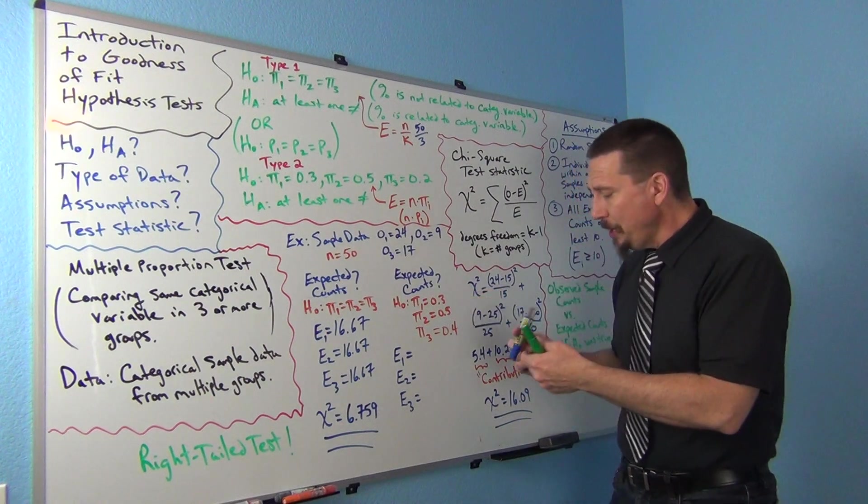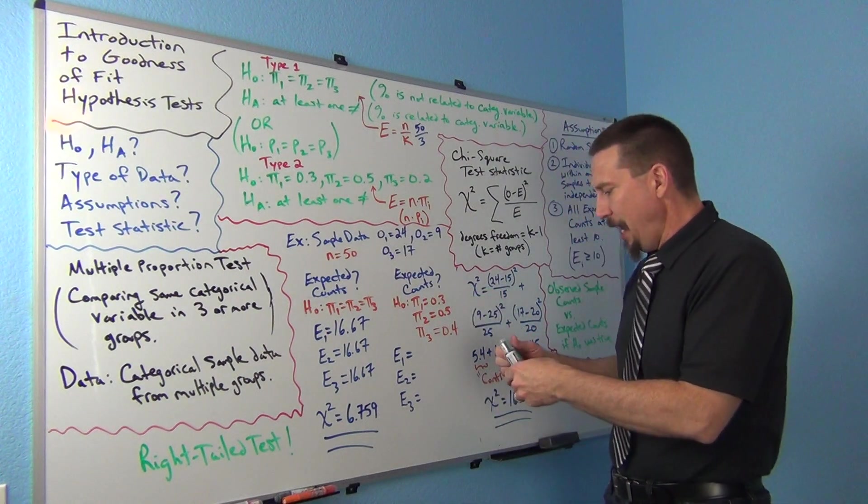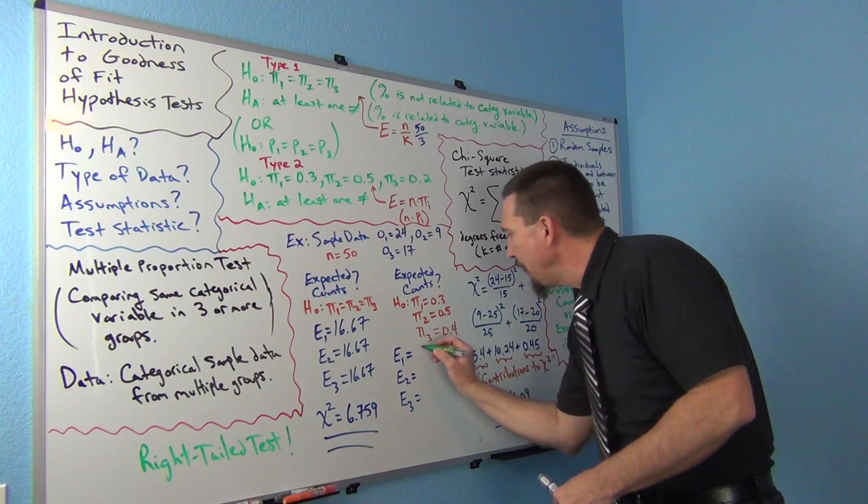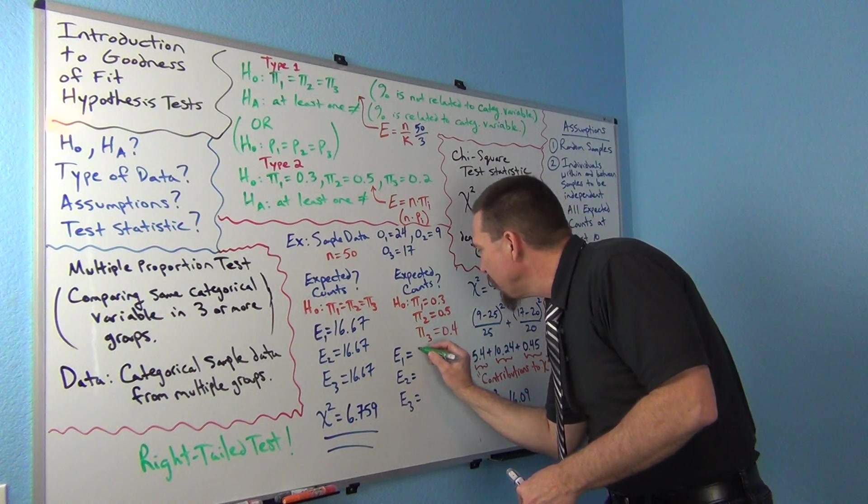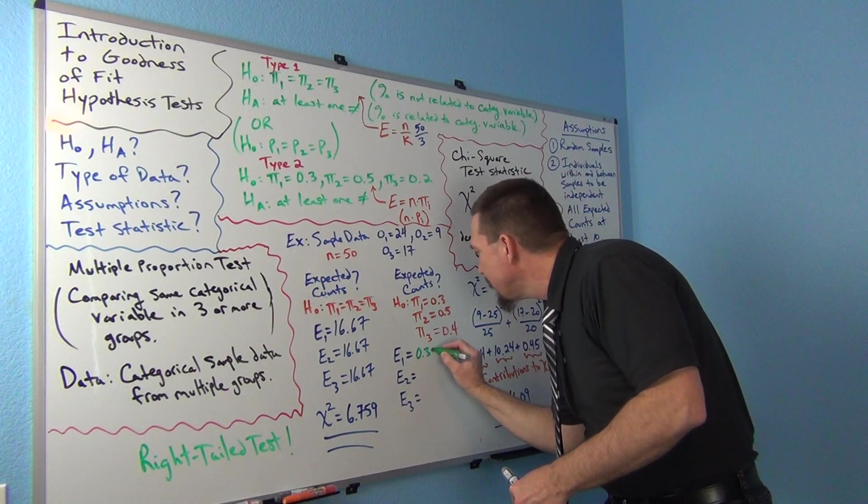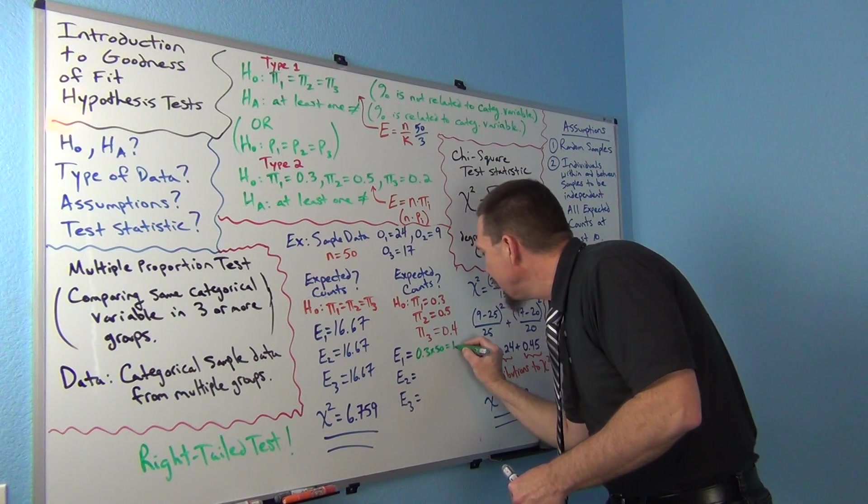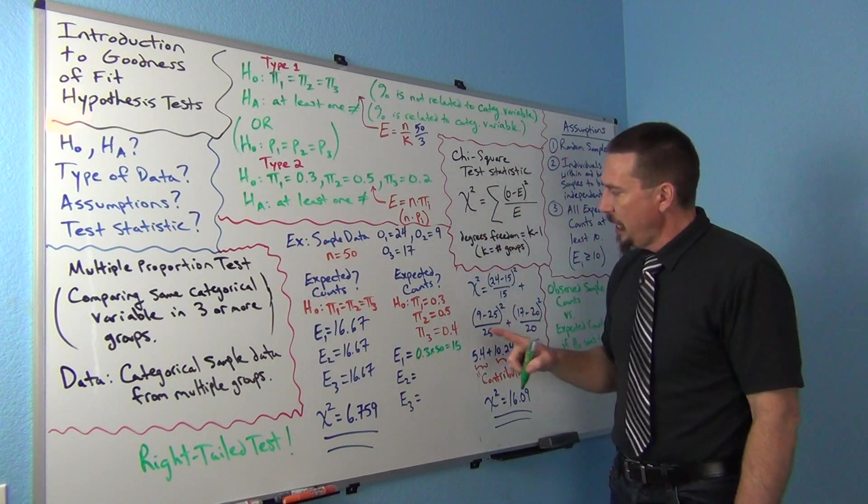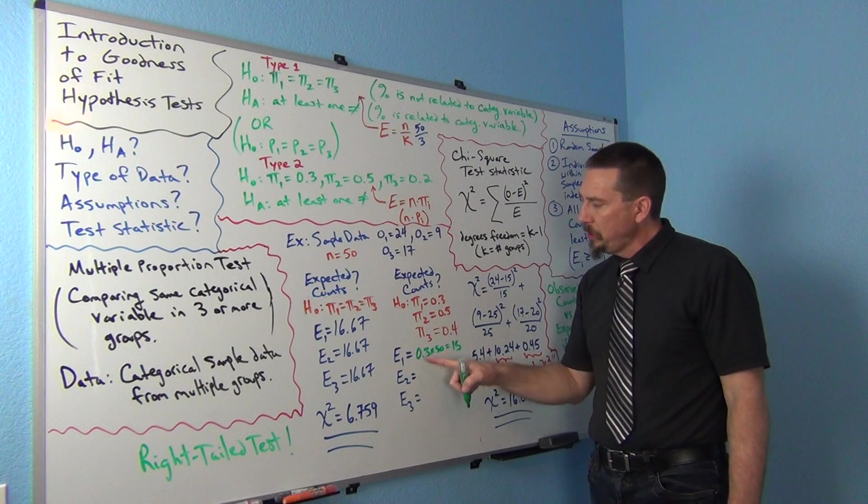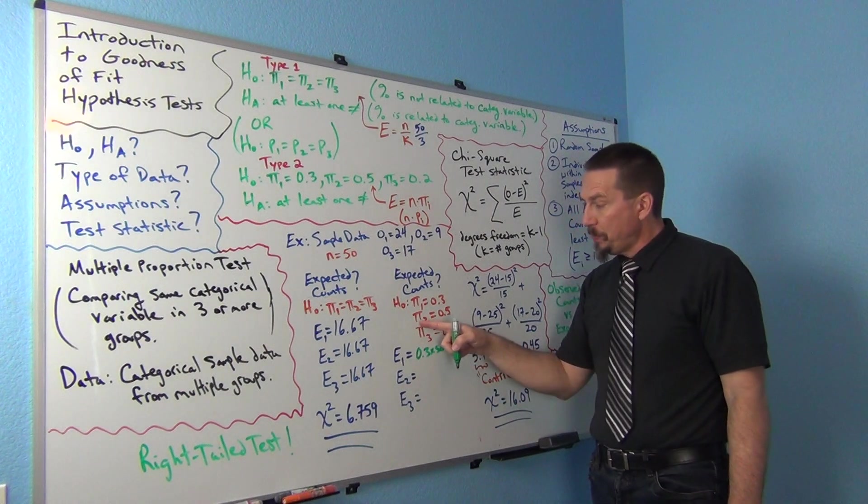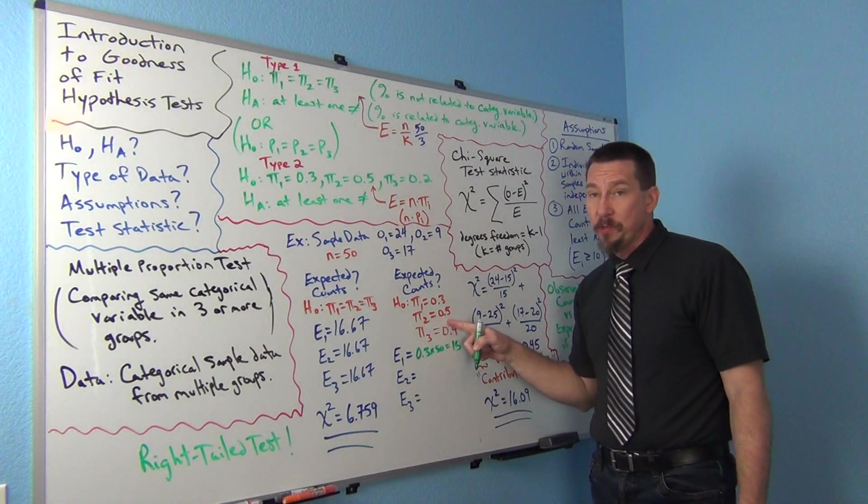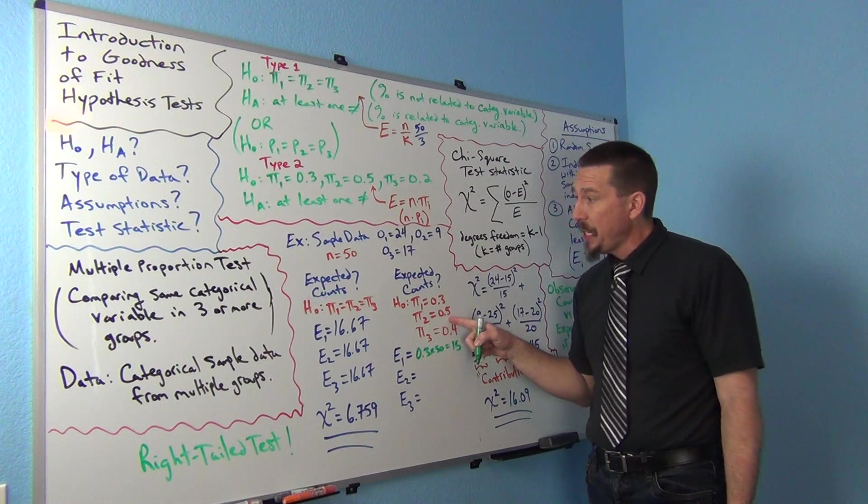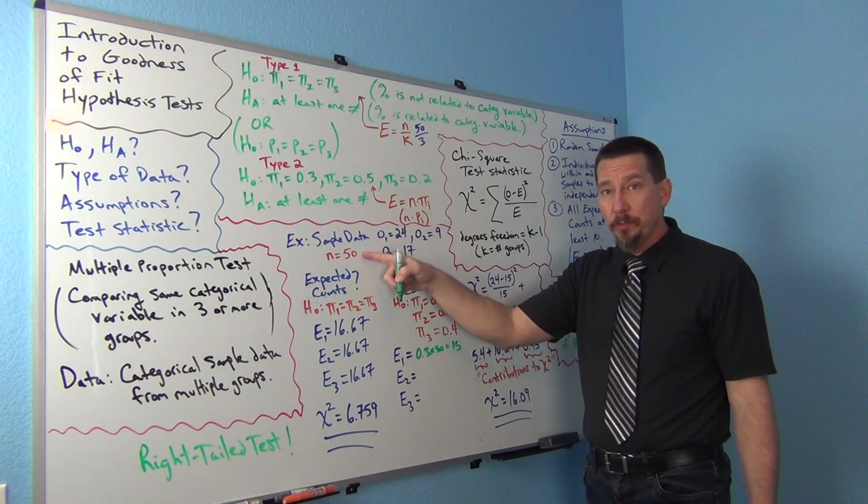So all I'm going to do is I'm going to multiply. So 0.3 times 50 is going to give us 15. Again, what about group two? Well, I expect the population percentage is supposed to be 50% in the null hypothesis. So I expect 50% of my sample to come from group two.